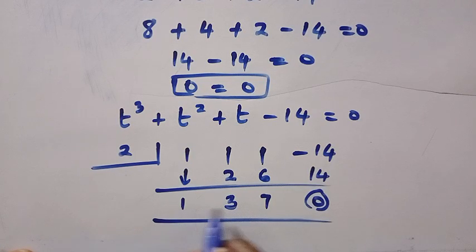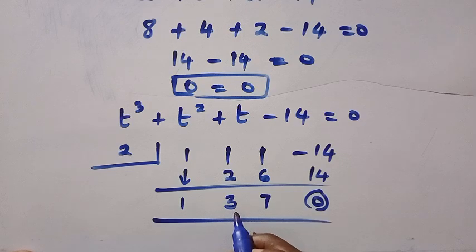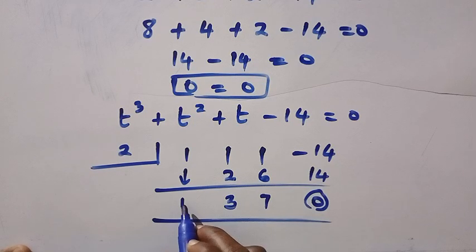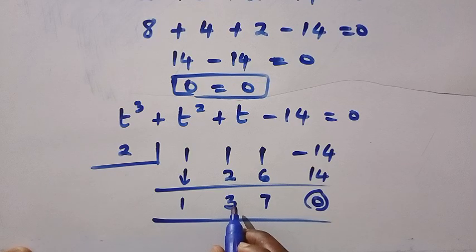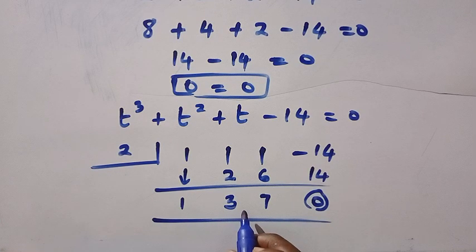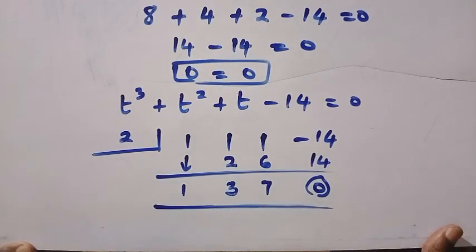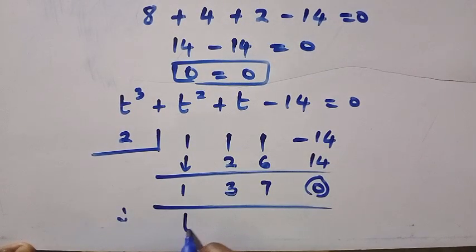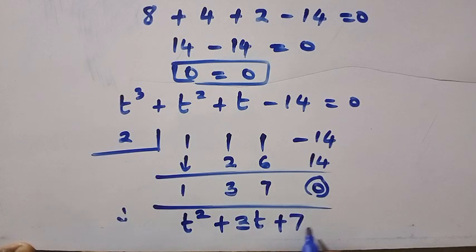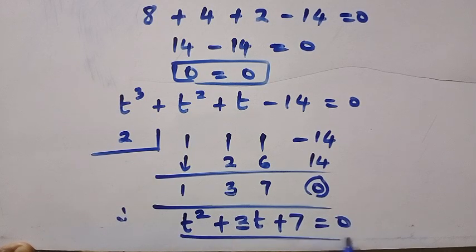This resembles a quadratic, because in a quadratic equation or expression, we are going to have three terms: first term, second term, and third term. The first term has the highest power, which is 2, followed by 1 and followed by the constant term. Using this to form a quadratic equation, we are going to have t^2 + 3t + 7 = 0. Let's try and solve for t in this quadratic equation.